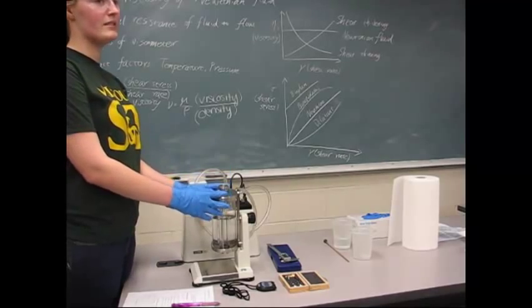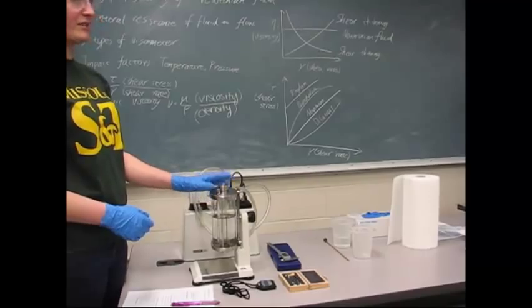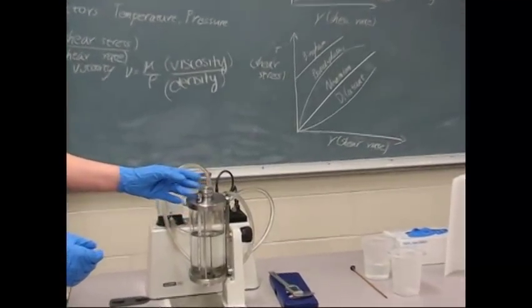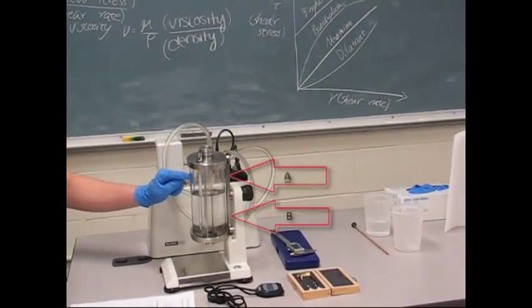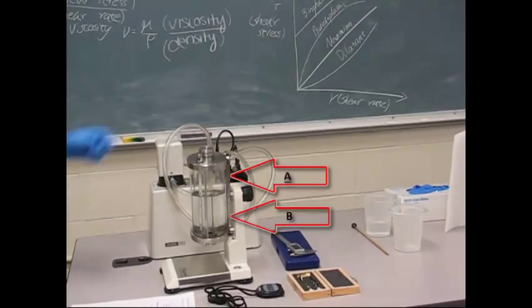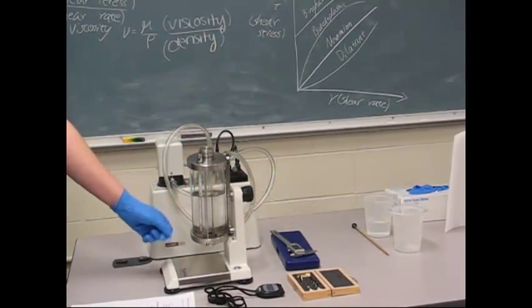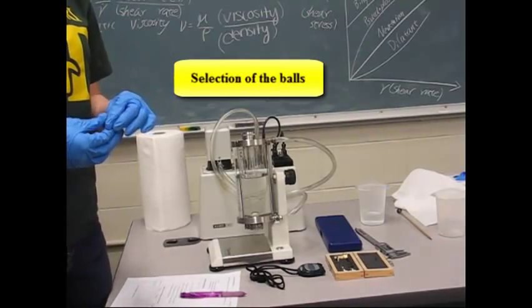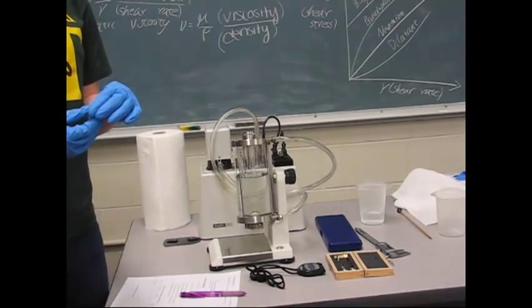So this is a falling ball viscometer, and it measures the viscosity of transparent Newtonian fluids like water. It does so by using the marks A on the top and B on the bottom and measures the distance that the ball falls and the time between those two. Since water has a viscosity of around one centipoise, we want to make sure we choose the correct ball to run this experiment with.